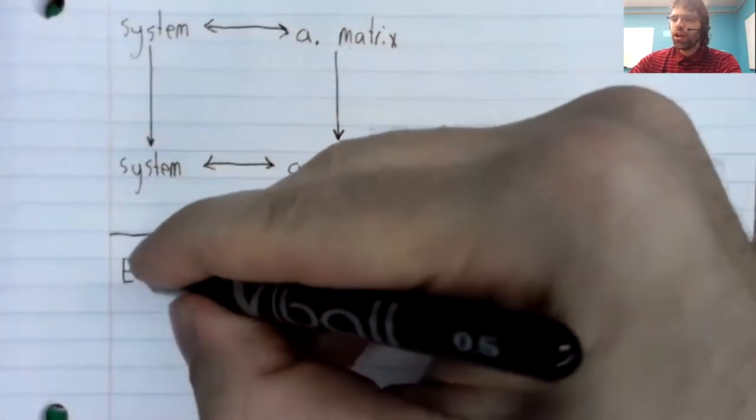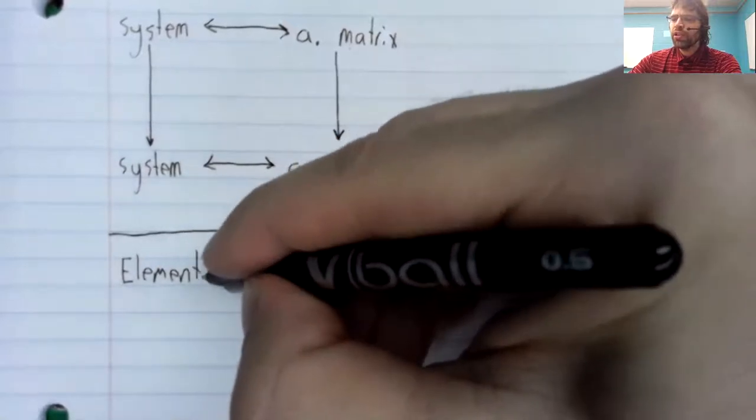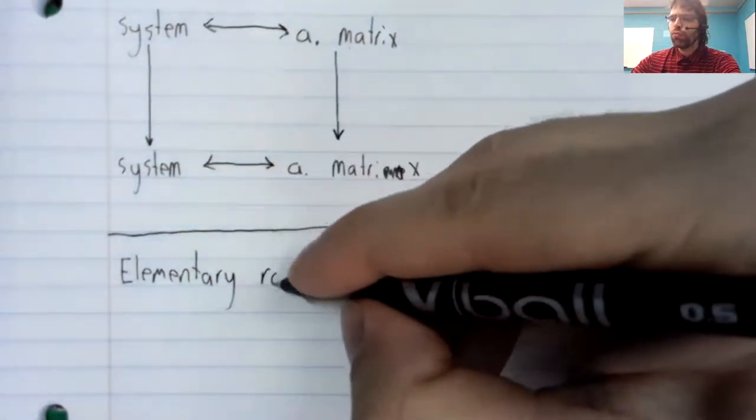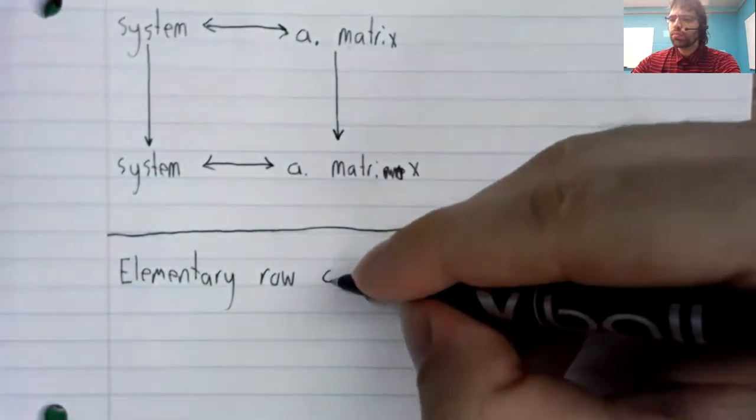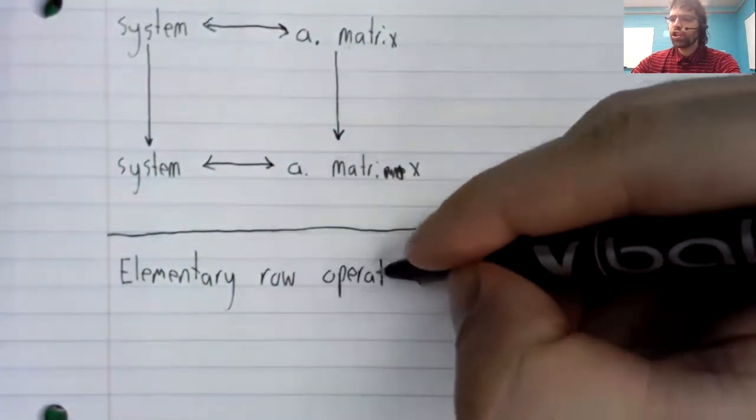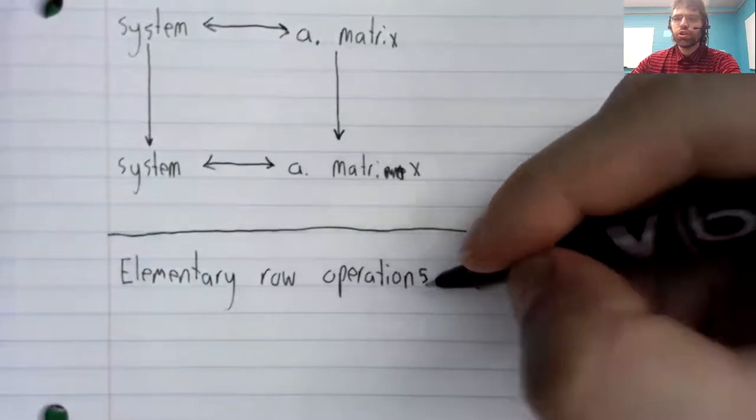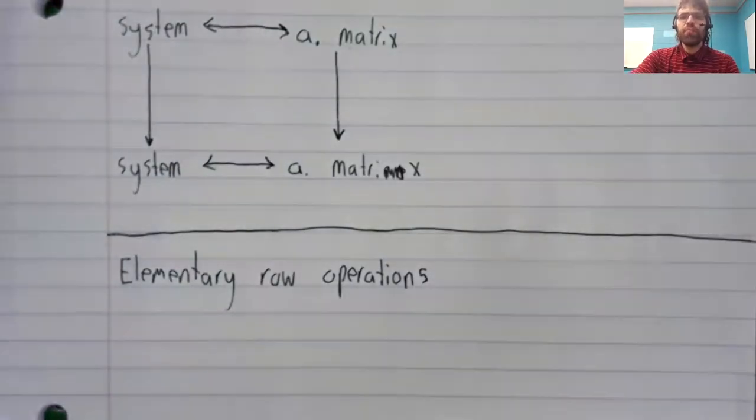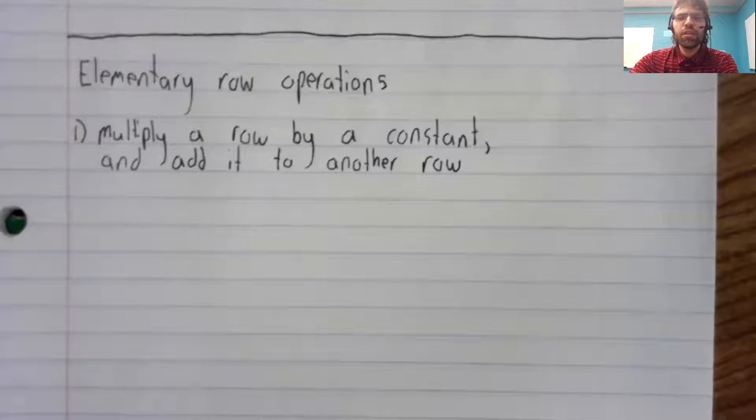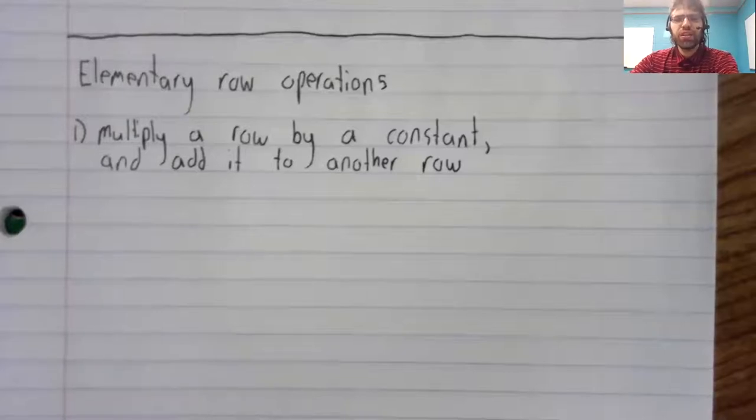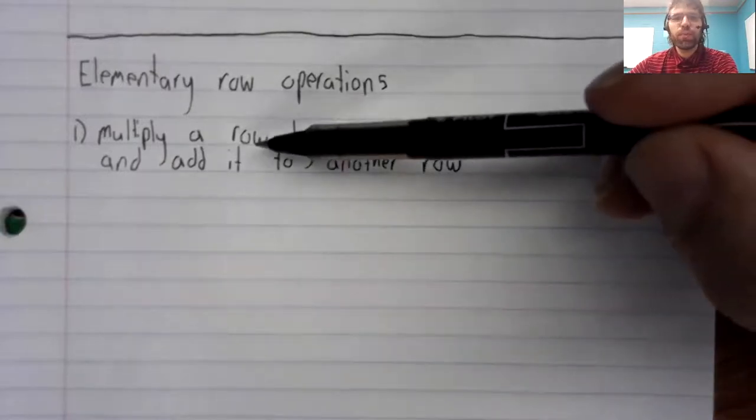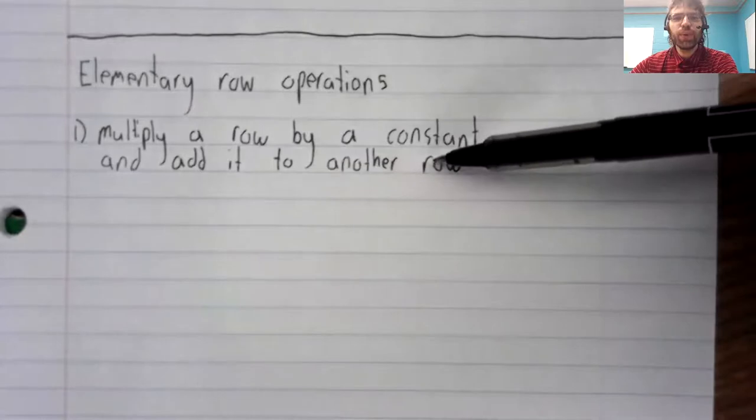The elementary row operations should seem familiar when I write them out. These are precisely the things I said we could do to systems of linear equations, except that I've replaced the word equation with row.